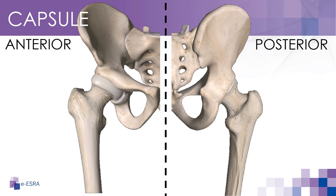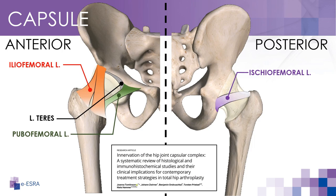The capsule of the hip joint is a fibrous structure that surrounds the front portion of the hip joint. It is composed of several ligaments, including the iliofemoral ligament, which is the strongest of the hip joint ligaments and runs from the ilium to the femur, helping to prevent hyperextension. The pubofemoral ligament runs from the pubis bone to the femur and helps to prevent excessive abduction and extension of the hip joint.